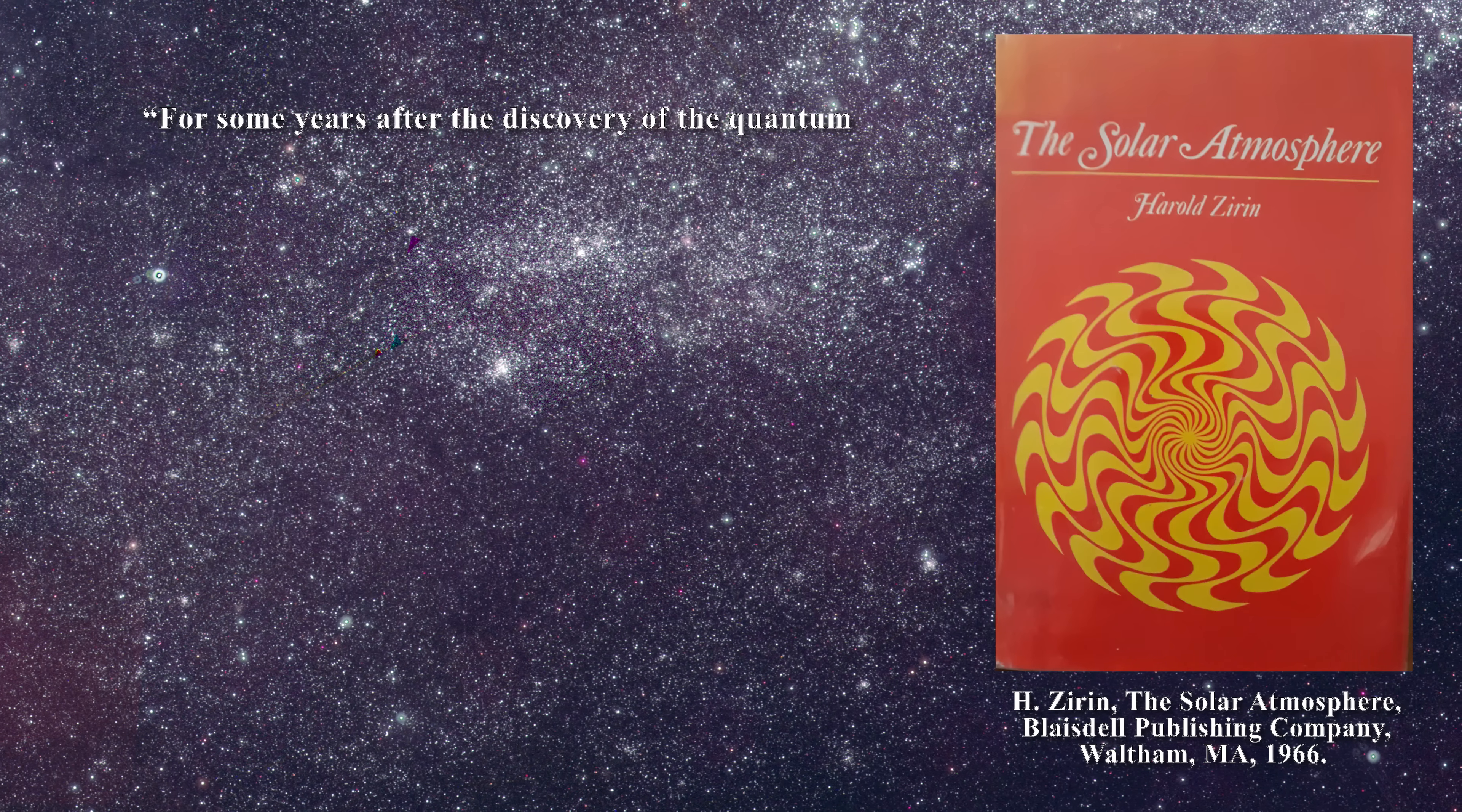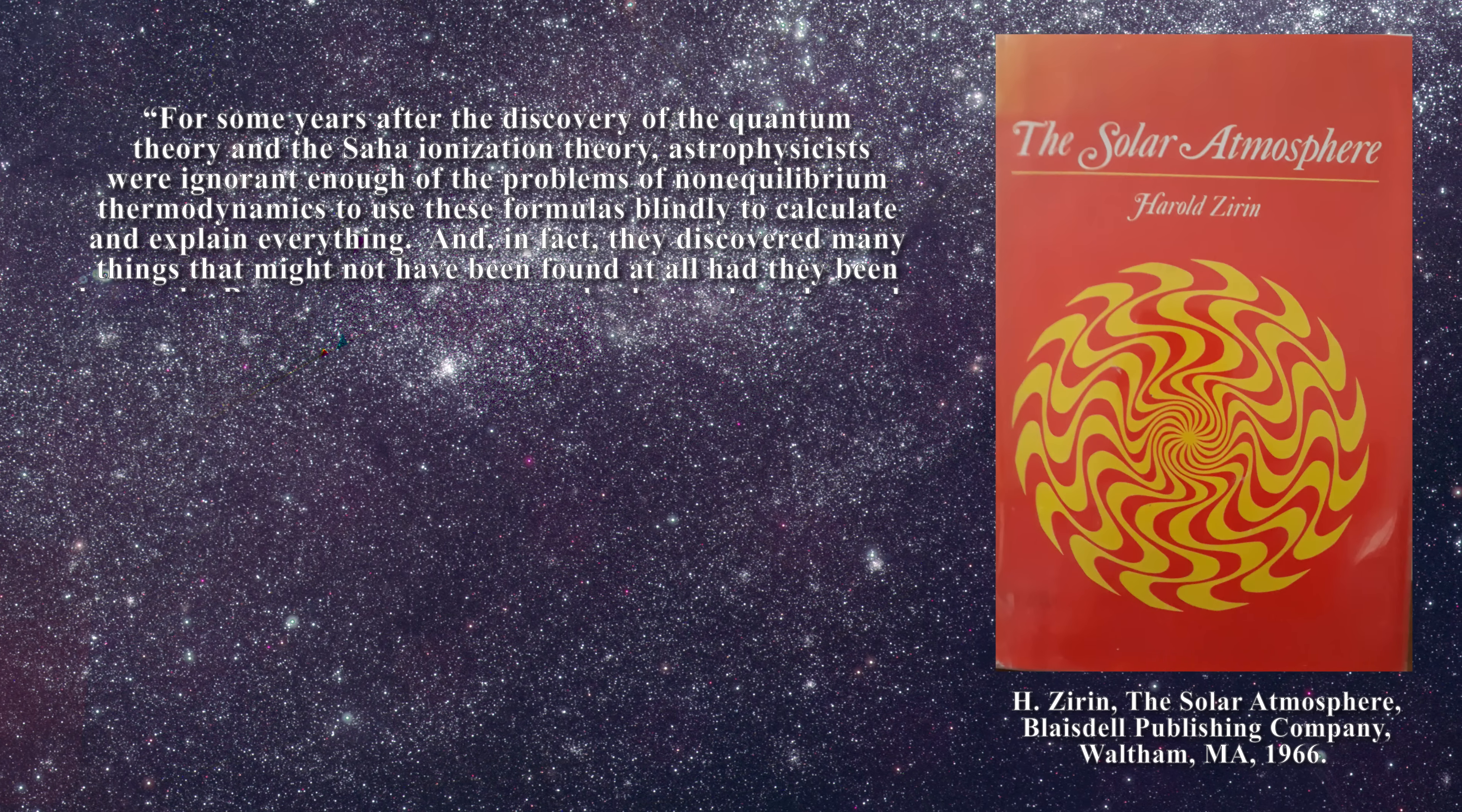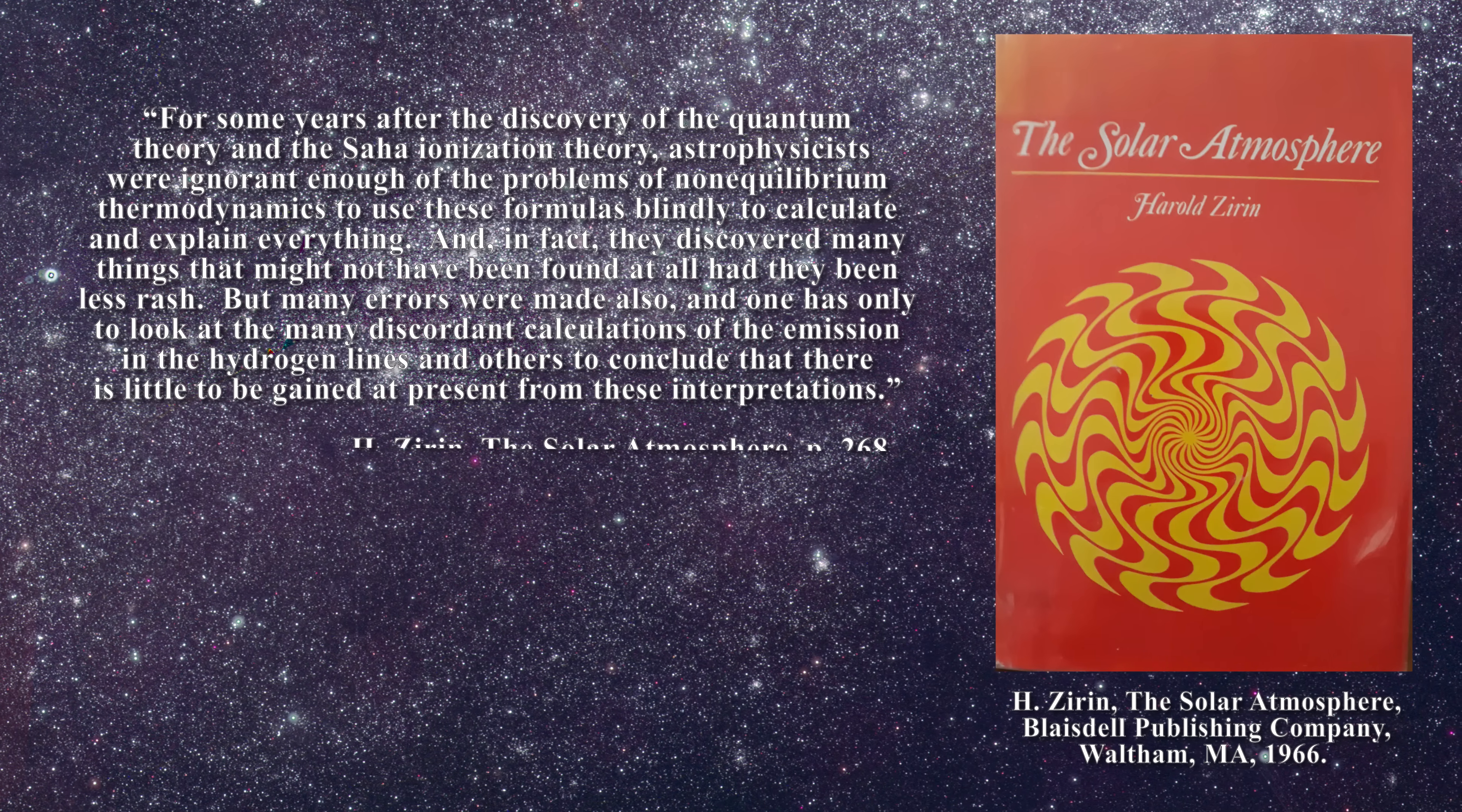At the end of his book, Zirin writes, For some years after the discovery of quantum theory and the Saha ionization theory, astrophysicists were ignorant enough of the problems of non-equilibrium thermodynamics to use these formulas blindly to calculate and explain everything. In fact, they discovered many things which might not have been found at all had they been less rash. But many errors were also made, and one has only to look at the many discordant calculations of emission in the hydrogen lines and others to conclude that there is little to be gained at present from these interpretations.